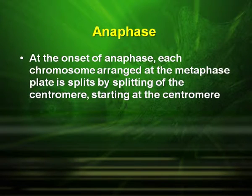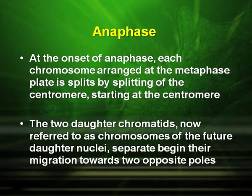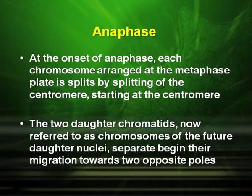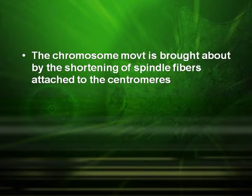The next stage is anaphase. At the onset of anaphase, each chromosome arranged at the metaphase plate is split by splitting of the centromere. The two daughter chromatids, now referred to as chromosomes of the future daughter nuclei, separate and begin their migration towards the opposite poles. The chromosome movement is brought about by the shortening of the spindle fibres attached to the centromeres.